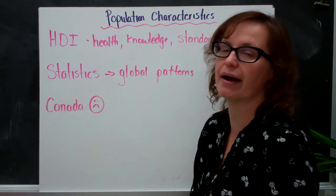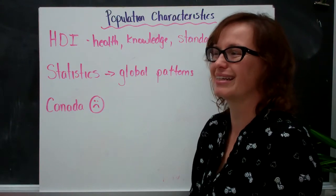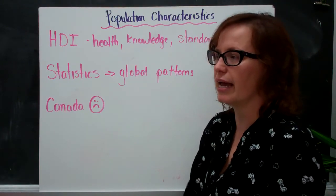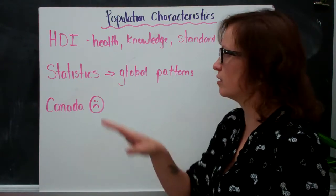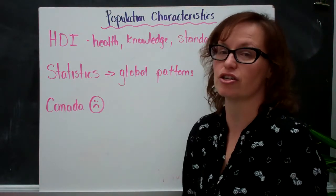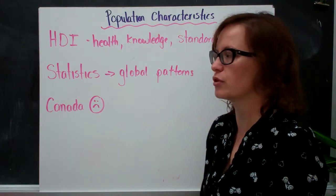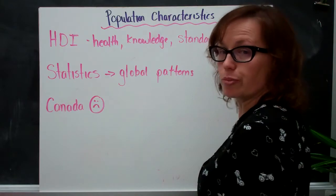Canada used to have a very high ranking or was ranked one of the best countries in the world to live in between 1994 and 2000. It dropped in its rankings because the United Nations realized that the health, knowledge and standard of living for many indigenous populations is substandard and so we lost some of our status until we can do better.